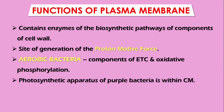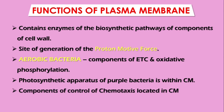Similarly, the photosynthetic apparatus of purple bacteria — photosynthetic bacteria — is located within the cytoplasmic membrane, just as the electron transport chain components are present in aerobic bacteria. Additionally, the components required for the control of chemotaxis — the transport of chemical agents — are located in the cytoplasmic membrane. Chemotaxis involves the movement of chemicals either inside to outside or outside to inside, controlled by components associated with the plasma membrane.